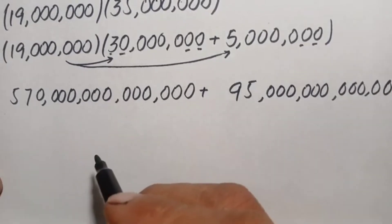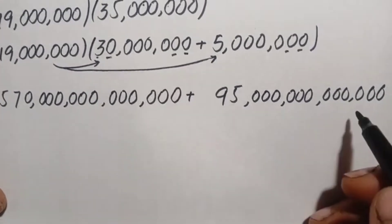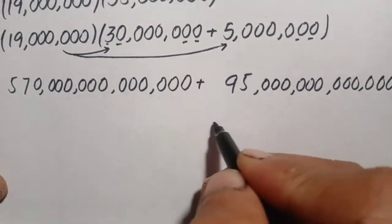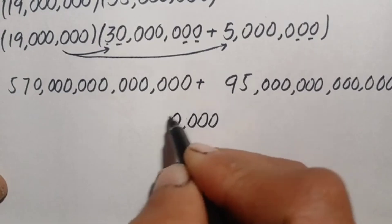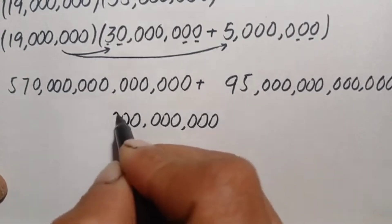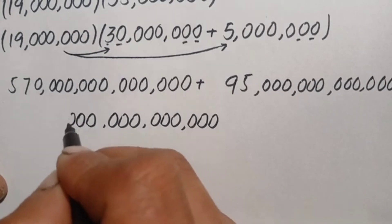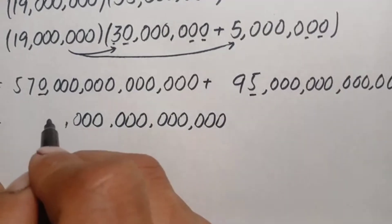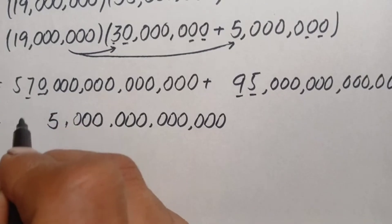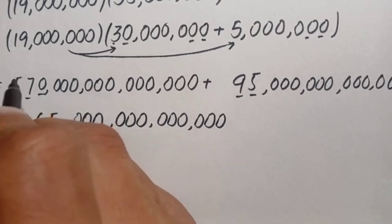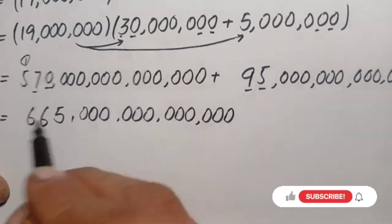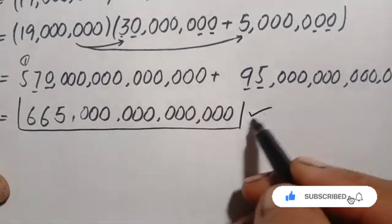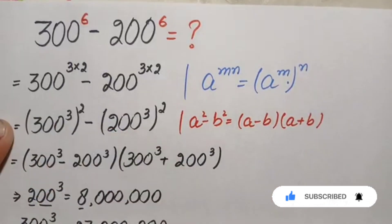Finally, we add 570 trillion and 95 trillion. Starting from the ones position, there are four groups of zeros which remain zeros. Moving to the trillions group: 5 + 0 = 5; 9 + 7 = 16, write 6 carry 1; 5 + 1 = 6. So the final answer is 665 trillion, which is the value of 300⁶ - 200⁶.